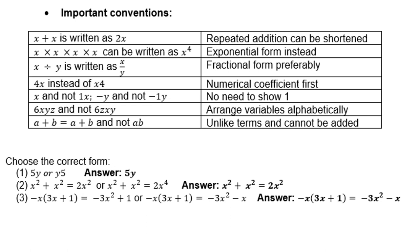Choose the correct answer: 5y or y5 — we prefer 5y. x squared plus x squared equals 2x squared — the first one is correct; the second (2x to the power 4) is wrong. Minus x into 3x plus 1: is it minus 3x plus 1 or minus 3x minus 1? It is the second one, because you must distribute the negative x into both 3x and the 1.